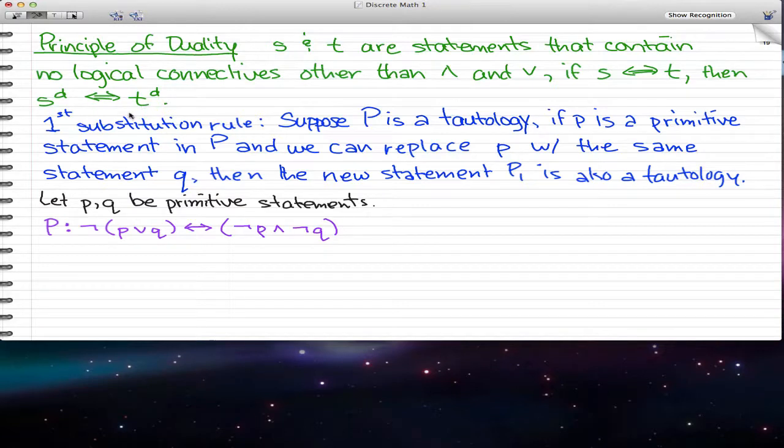And that brings us to our first substitution rule. Suppose p is a tautology. If little p is a primitive statement in P, so little p is a component of big P, then we can replace p with the same statement q. This little q is pretty much the exact same statement as little p. And in this case, the new statement P1, because we replace little p with little q, so then P is replaced by a new statement P1. That is also a tautology.